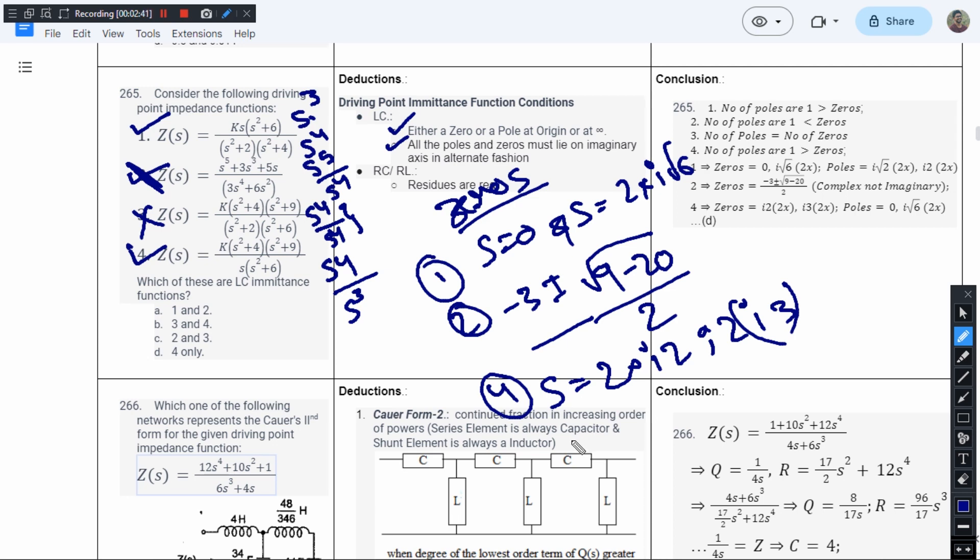So we will have to search the options now. Here option A has 1 in it, but we have proved that 2 cannot be the answer, so this is not the right answer.